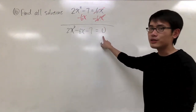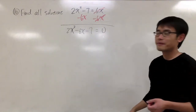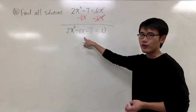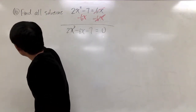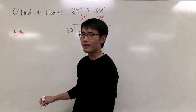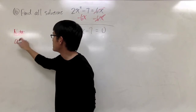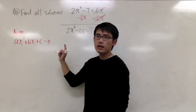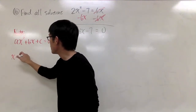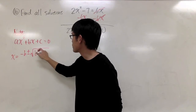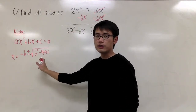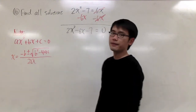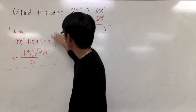Since it's not factorable, we can go ahead and use the powerful quadratic formula. You can also do it with completing the square — maybe I'll do that in the next video. To use the quadratic formula, you must have the equation in standard form: ax squared plus bx plus c equals 0. Then x equals negative b plus or minus square root of b squared minus 4ac, all over 2a. This is the famous quadratic formula.